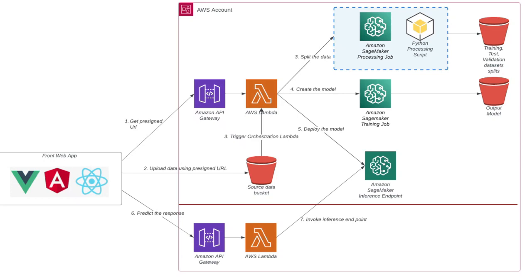Let's take a closer look at this architecture diagram. On the left side you see a front-end web application coded using Vue, Angular, or React TypeScript — in my demo I'm using React. Then you use React TypeScript to invoke the Amazon API Gateway, which in turn invokes an AWS Lambda to fetch the pre-signed URL for the bucket on which we will upload the training dataset. Then we upload the training dataset using the pre-signed URL, which triggers the orchestration Lambda using the S3 event notification.